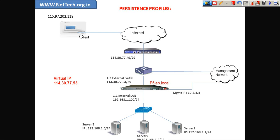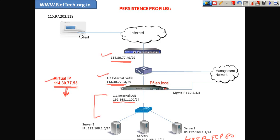Here we have an F5 box. The external IP address is 114.30.77.54/29 — this is the gateway. The internal IP address is 192.168.1.100. There are three servers all running an HTTP application on TCP port 80, which is the default port: server 1, server 2, and server 3. The virtual IP address configured here is 114.30.77.53, which is a publicly routable IP address. The internal addresses are RFC 1918 non-routable addresses.